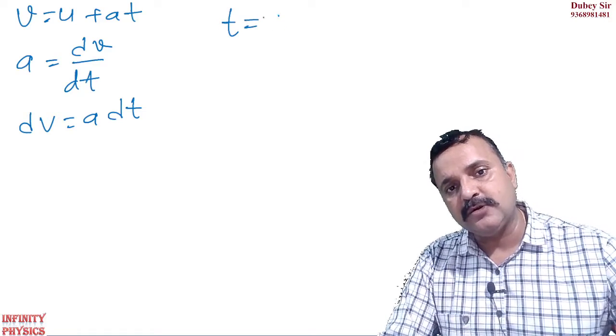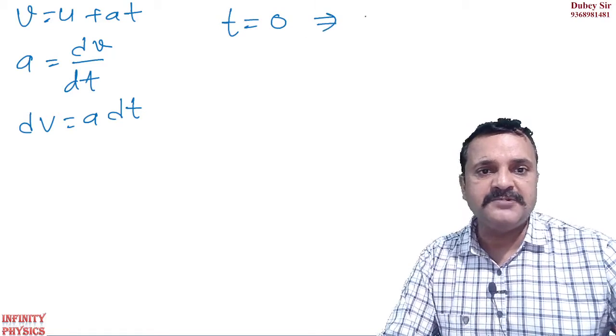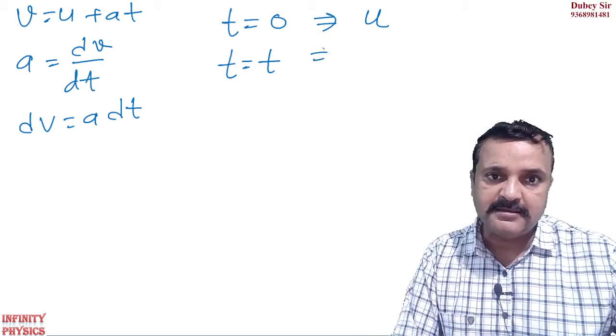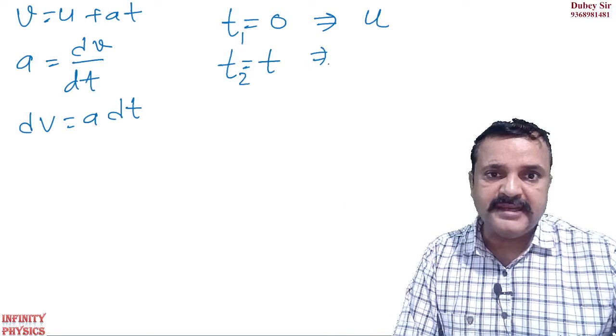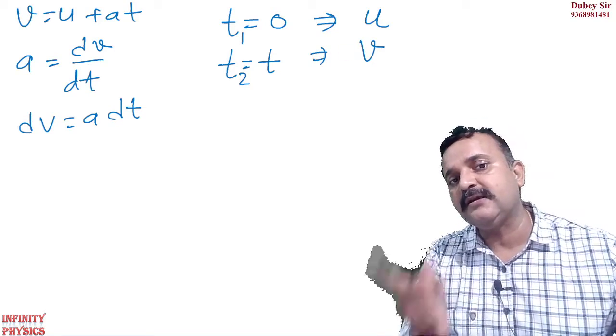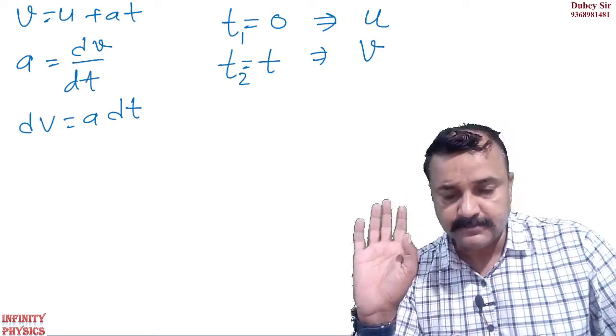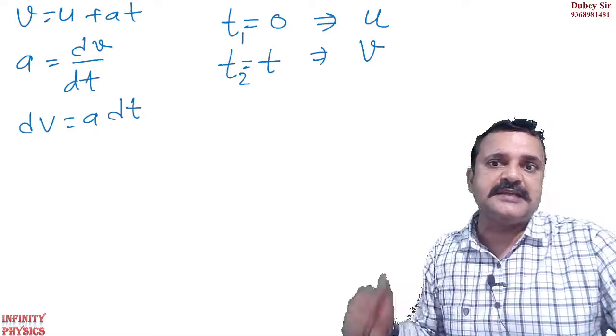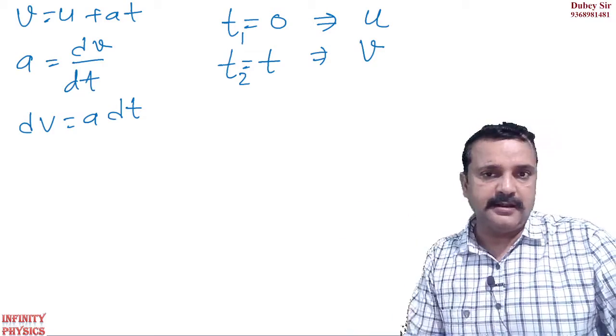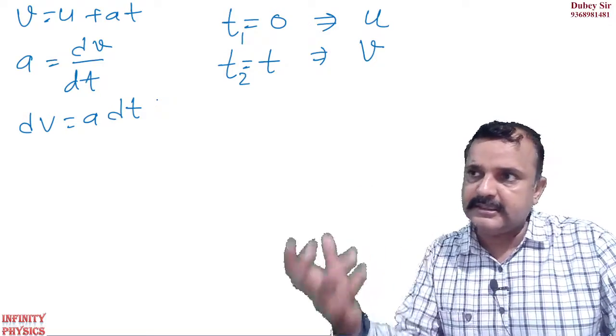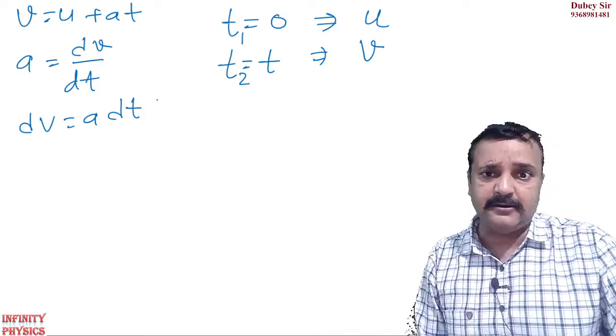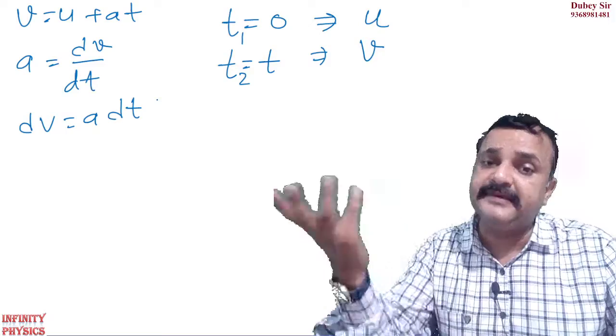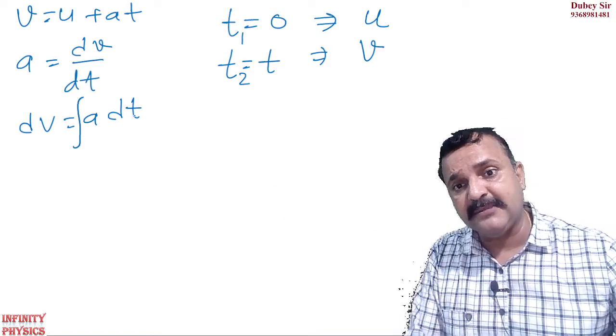Aap dhyans dekhiyega. Jab aapka time t is equal to zero hai, us time object ki initial velocity kiya hai? U. And jab time is equal to t hai, I mean 30 second ke baad, jab t1 is equal to zero, t2 is equal to t hai, us time object velocity bharh karke v ho jati. Hame nai observation karna start kia. Stop watch liya. Time zero rakhha.